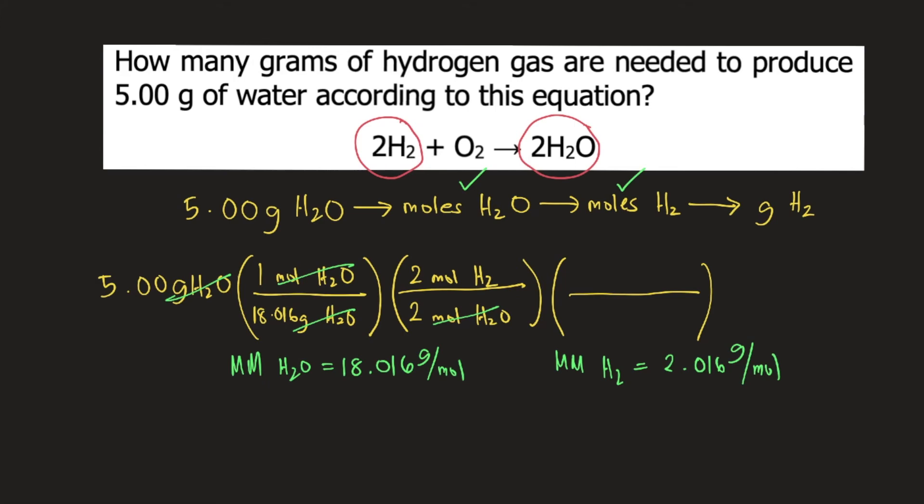You put 1 mole in the denominator and in the numerator you put 2.016 grams. So moles of hydrogen gas will cancel and your final unit would be grams of hydrogen gas.